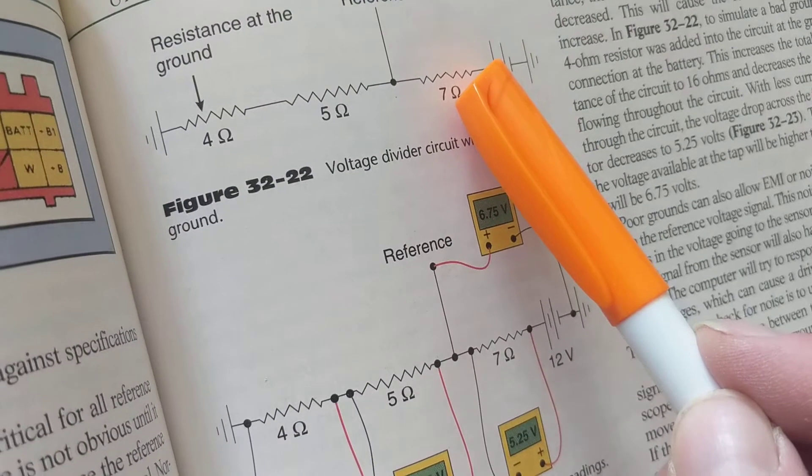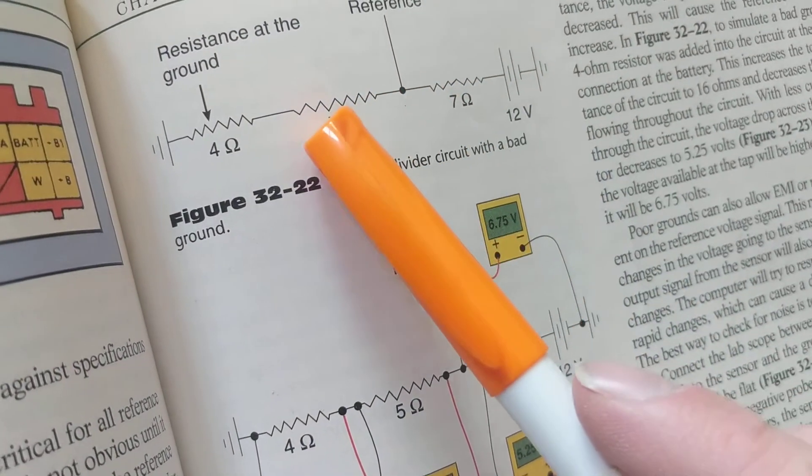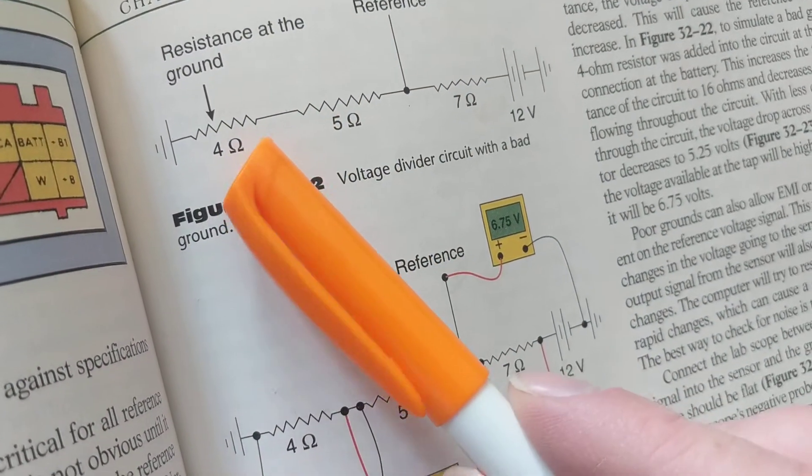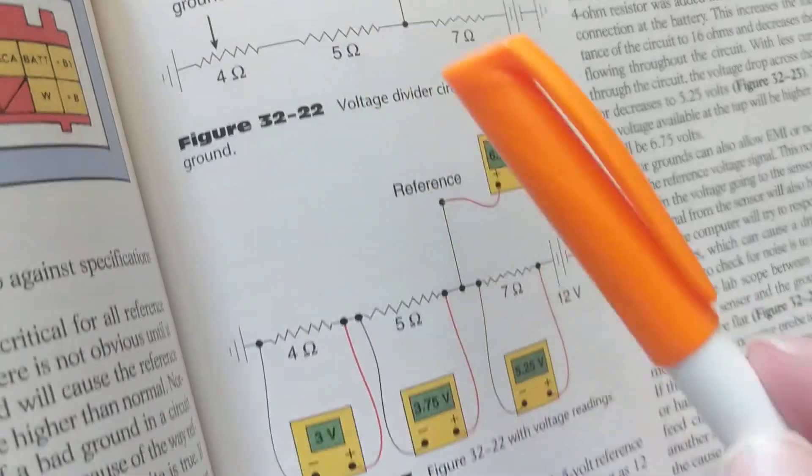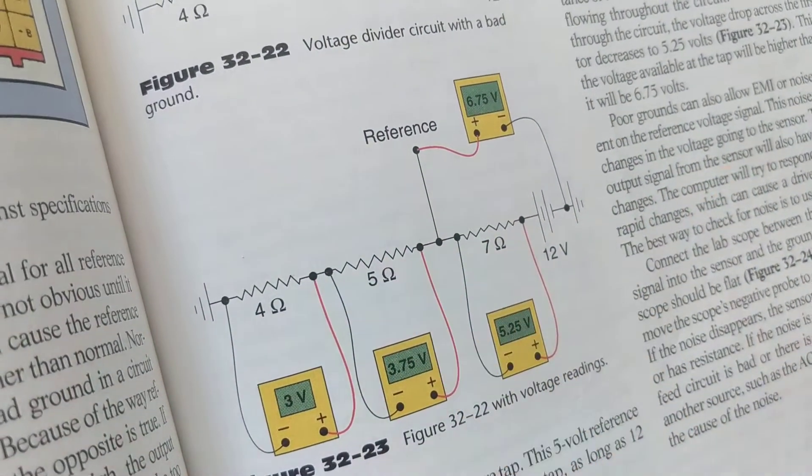So if this was a fuel pump and I'm measuring after the fuel pump to ground, I should measure 0 volts, but I'm not. I'm measuring 4 volts. That's a problem right there.